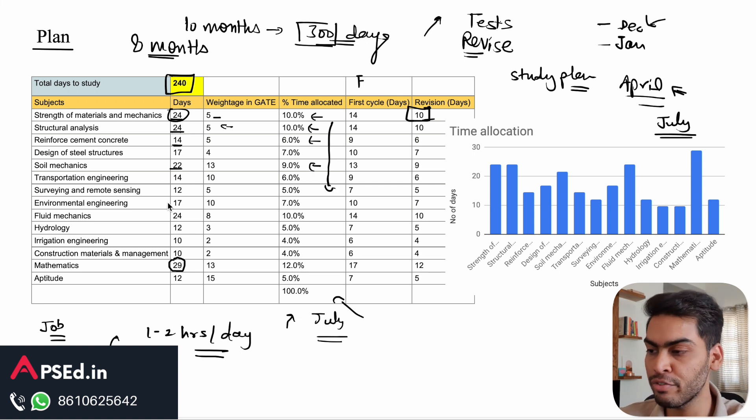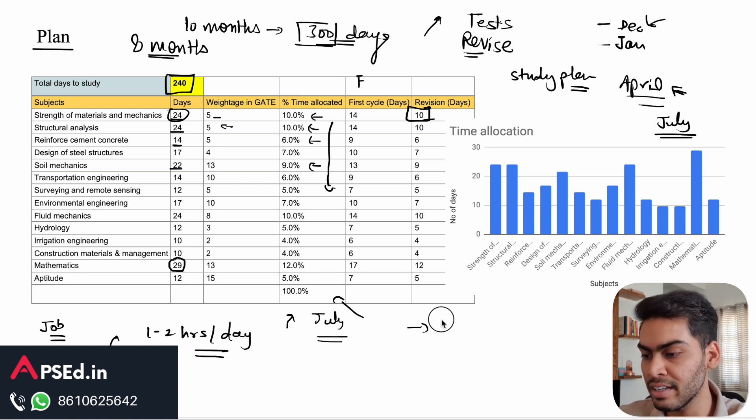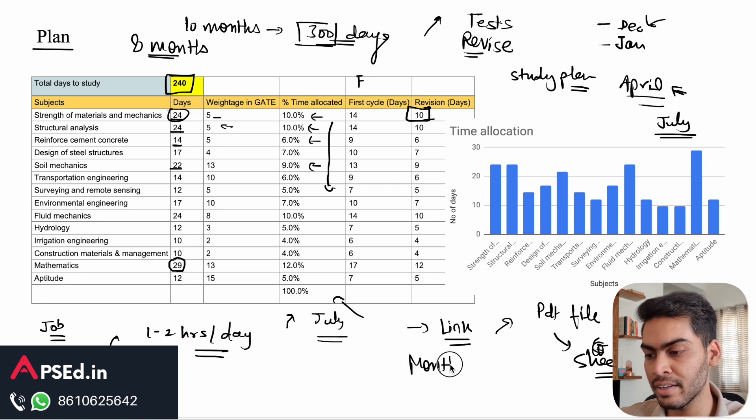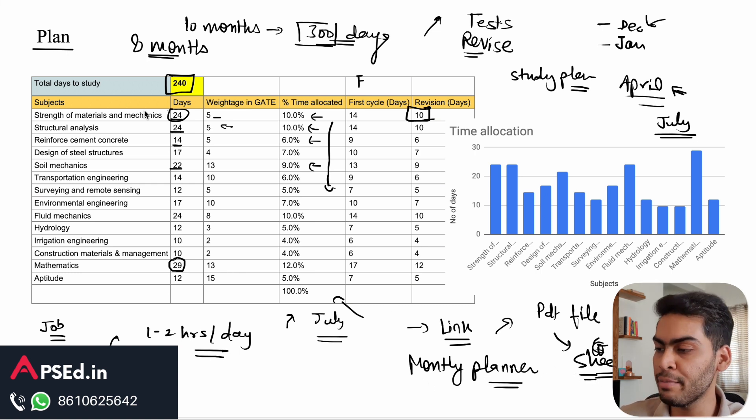To help you with that, I have given a link. Using that link you can go to our website or app, and there is a PDF file with this study plan. In that PDF file there is the Google Sheet link. That sheet, once you download or make your own copy, you can make modifications as per your requirements. There is also a monthly planner, so you can use that in your preparation as well.